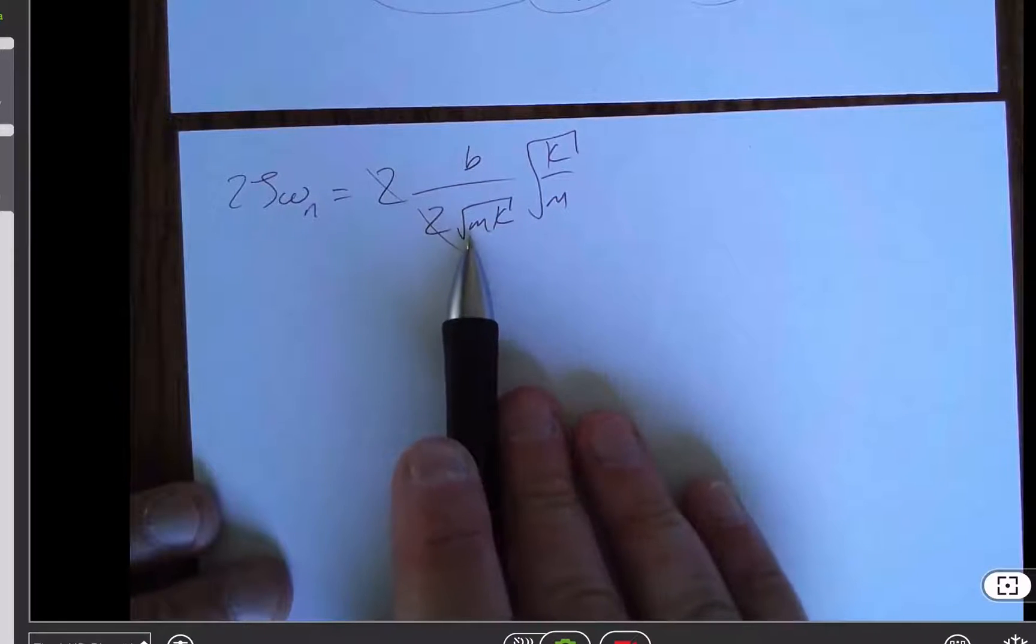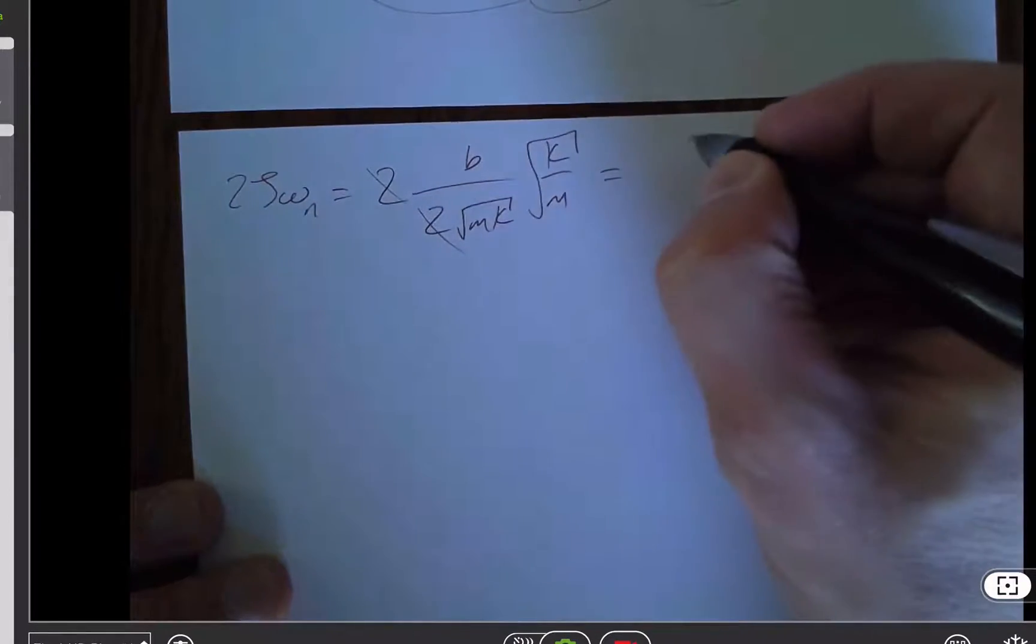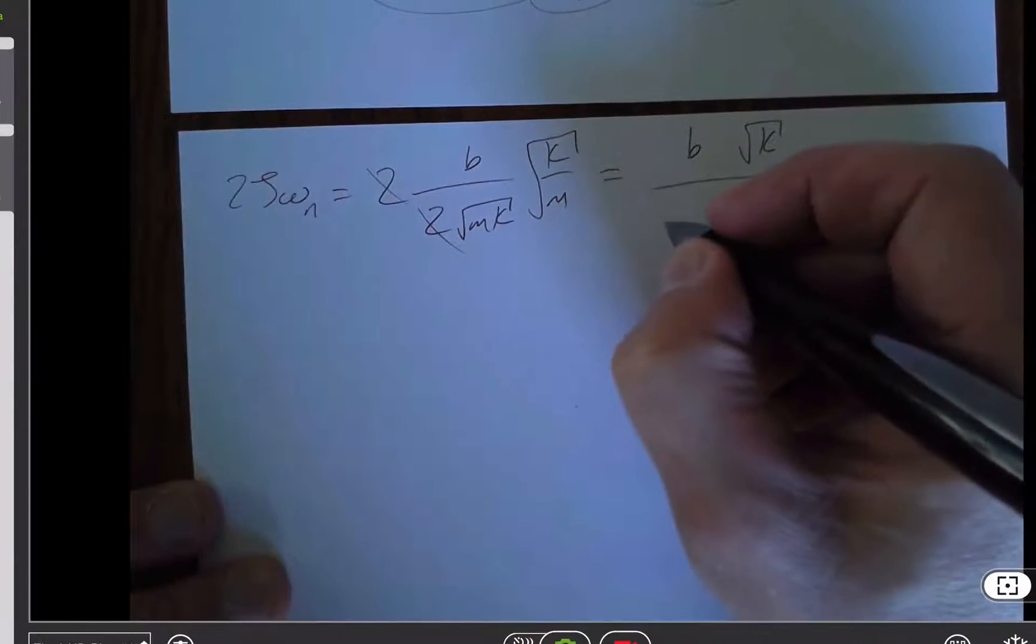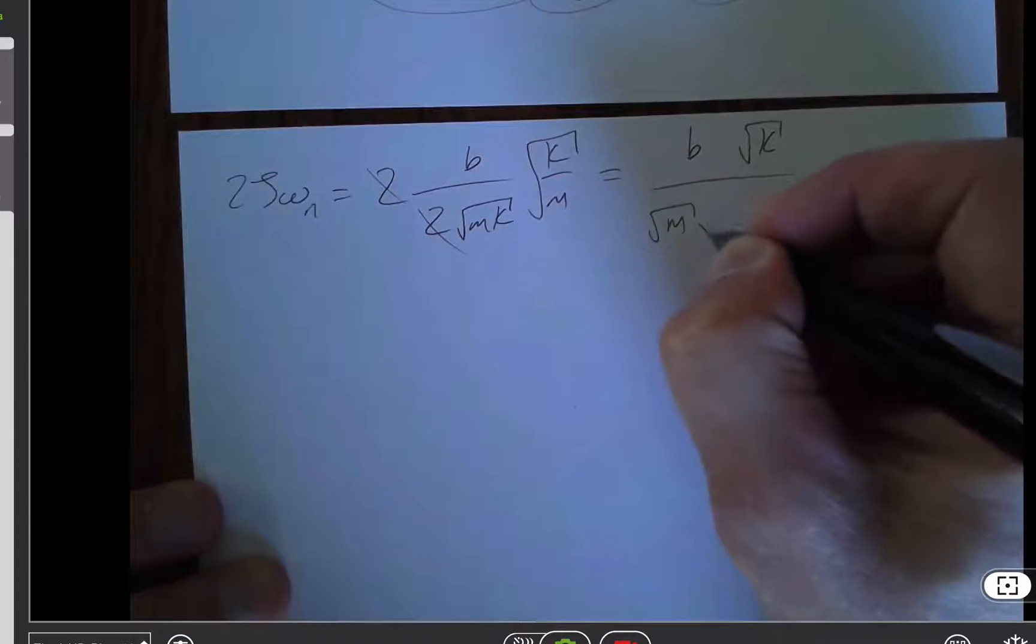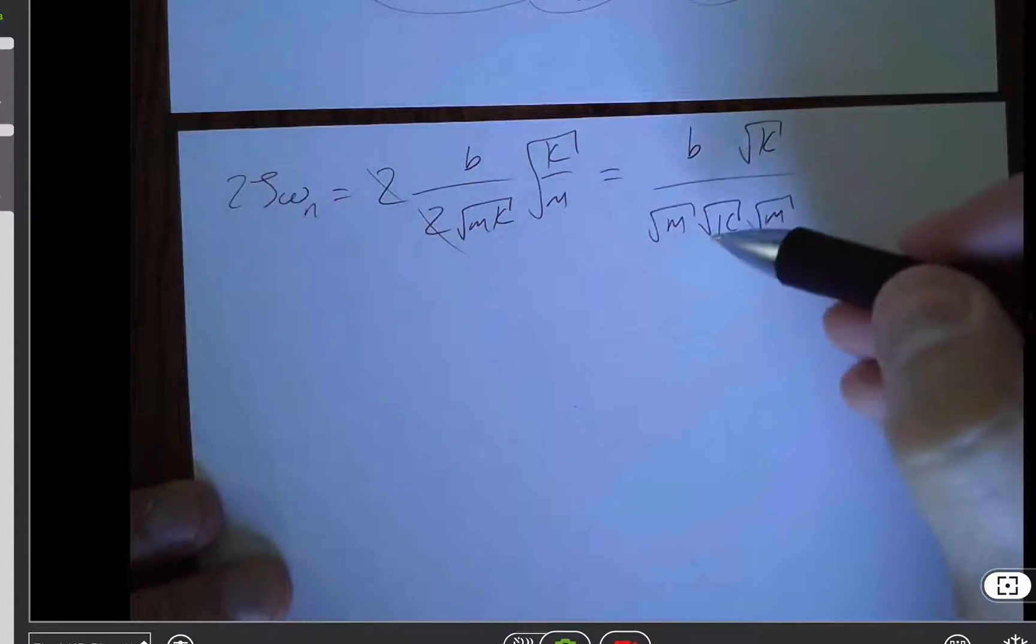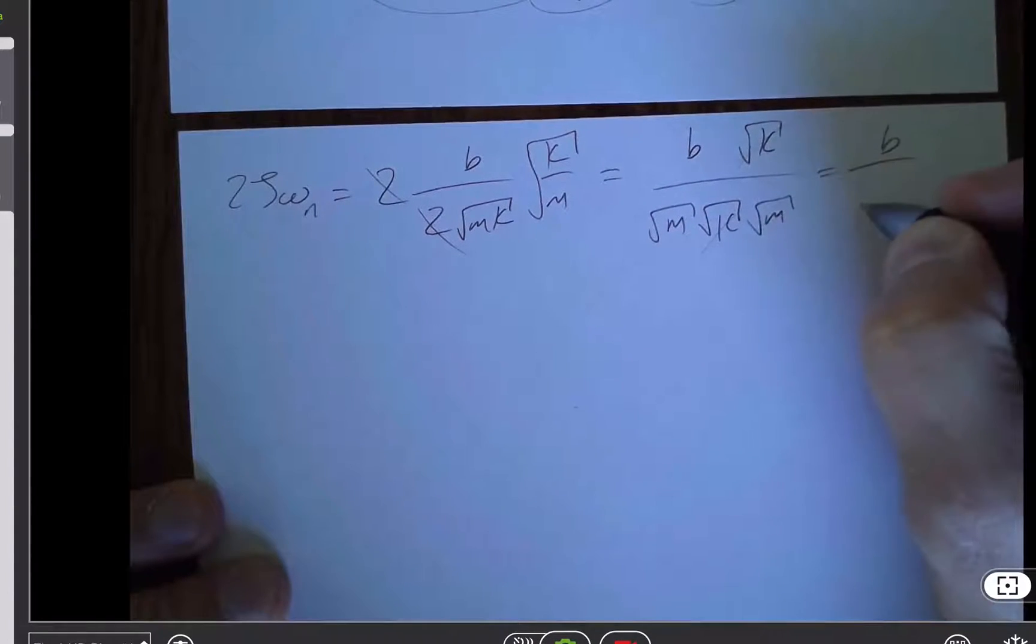And I'm going to write this as root m times root k and root k divided by root m. So we've got b root k divided by root m root k root m. And so the root k's cancel. And we're left with b over root m times root m.